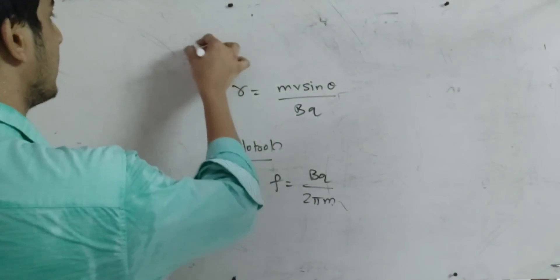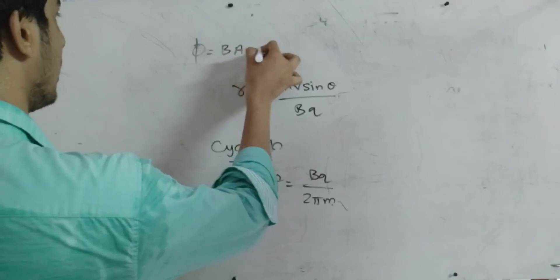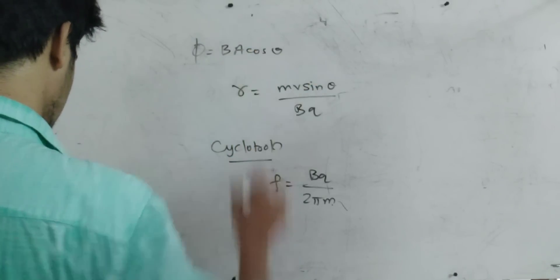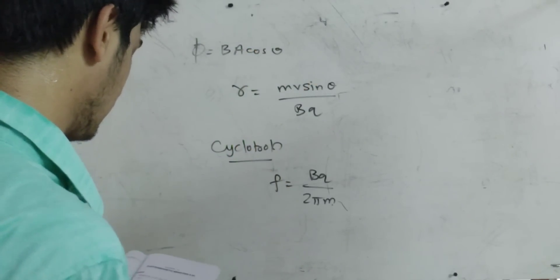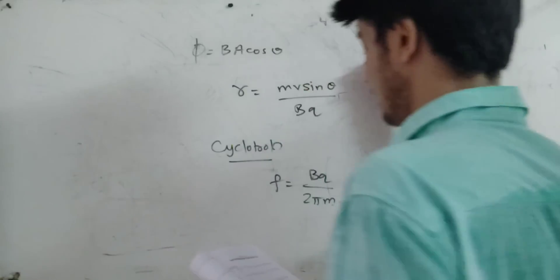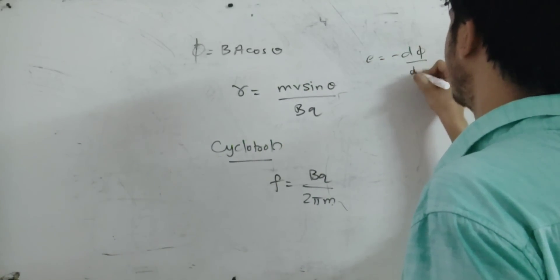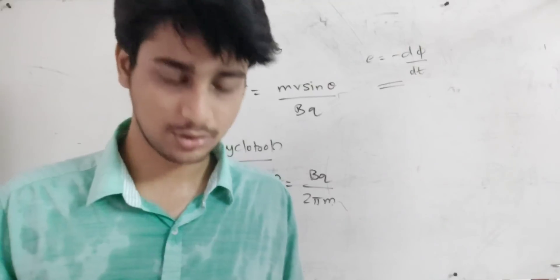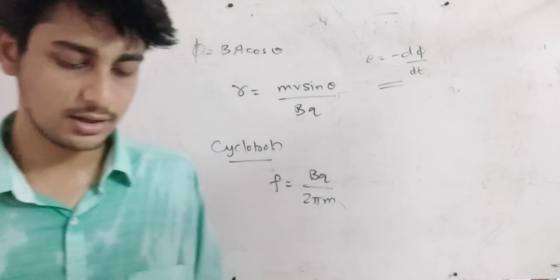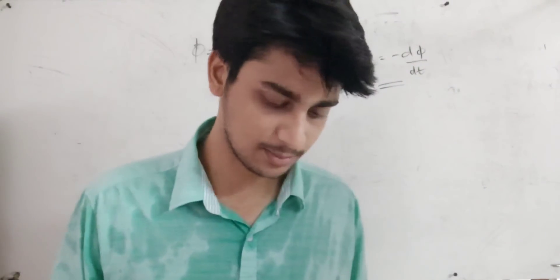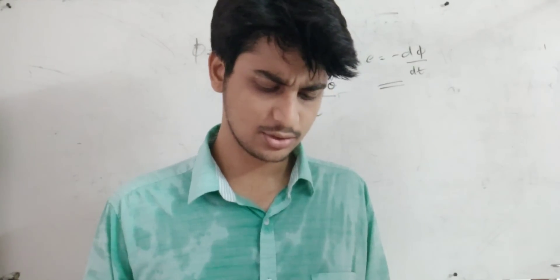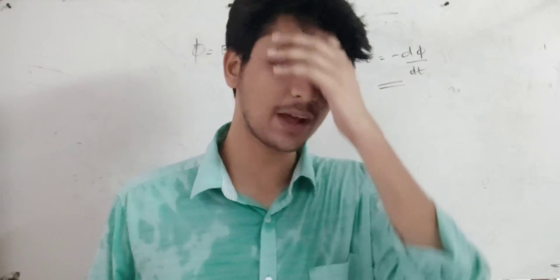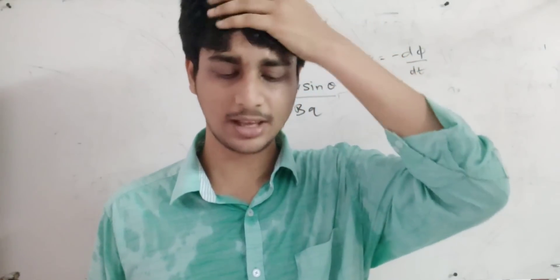Magnetic flux: Φ is equal to BA cosθ. Induced EMF E is equal to minus dΦ by dt — change in flux induces EMF. NLR is important. Faraday's law — that's important. Lenz's law: EMF is equal to minus dΦ by dt. E is equal to minus L di by dt — these are versions of the same equations.